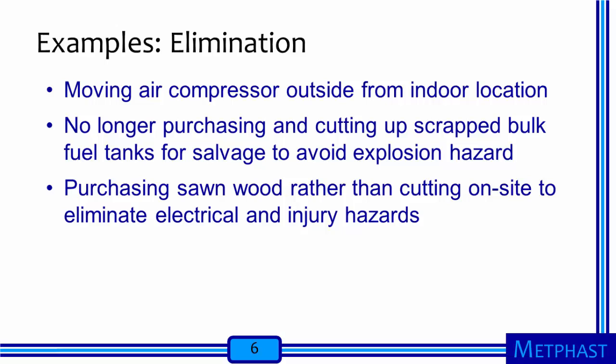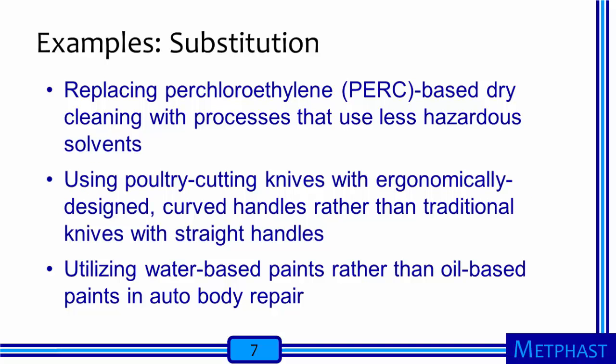Let's look at some examples of controls in each tier. Examples of elimination include moving an air compressor outside from an indoor location so that vapors, particles, and noise are eliminated from the work area; a salvage firm that chose to no longer cut up scrap bulk fuel tanks due to explosion hazard concerns; and a company that decided to purchase sawn wood rather than cutting wood on site to eliminate electrical and injury hazards. Moving on to engineering controls, we'll look at examples separately for substitution, automation, isolation, ventilation, and control equipment.